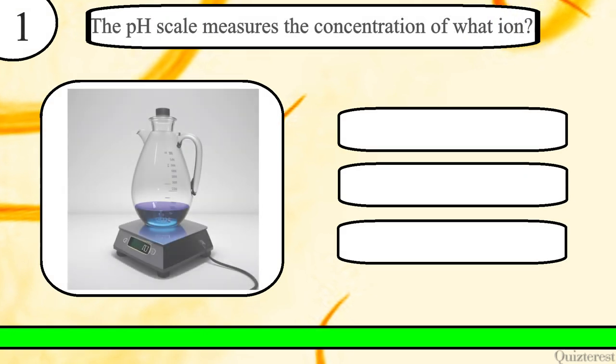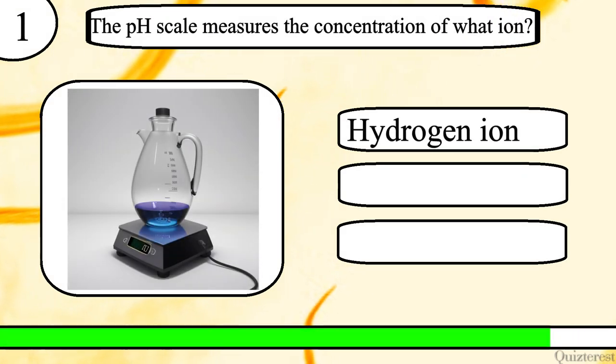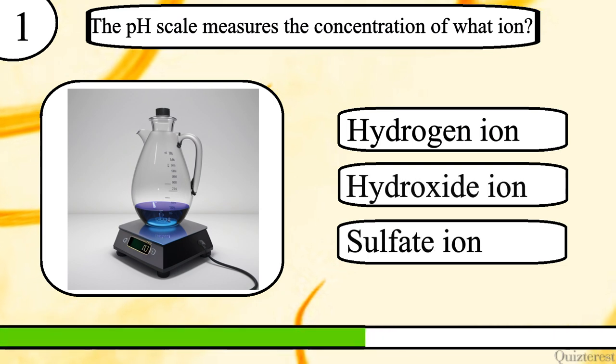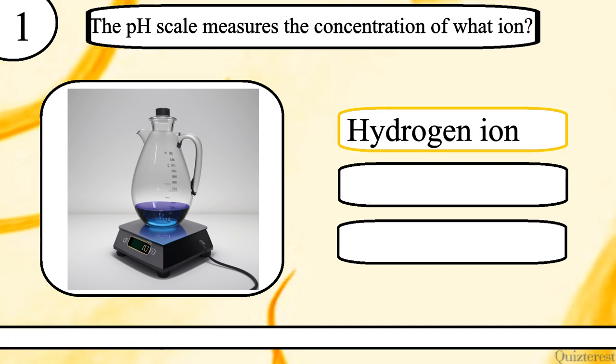Question 1. The pH scale measures the concentration of what ion? Hydrogen ion, hydroxide ion, or sulfate ion? The correct answer is hydrogen ion.